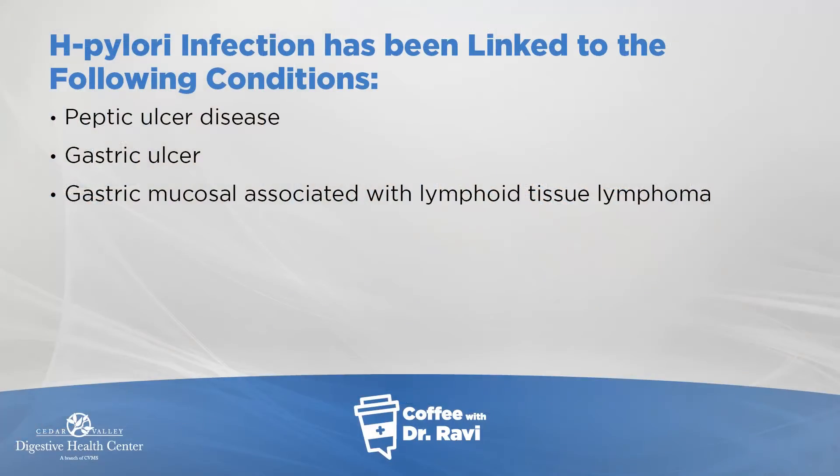Once you get H. pylori, it infects the lining of the stomach — the small pouch that is sitting right where the esophagus and the stomach meet. When this area gets infected with H. pylori, it causes ulcerative disease. The ulcers can be in the stomach or the first portion of the bowel that attaches to the stomach, called the duodenum.